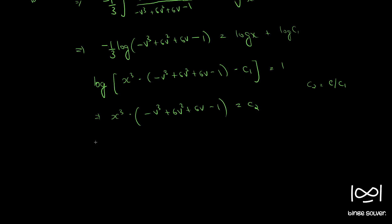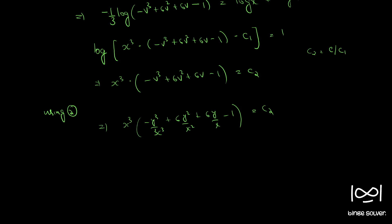Now putting v = y/x back using the substitution y = vx, we get x³ · (−y³/x³ + 6y²/x² + 6y/x - 1) = c₂. Bringing x³ inside gives: −y³ + 6y²x + 6yx² - x³ = c₂.